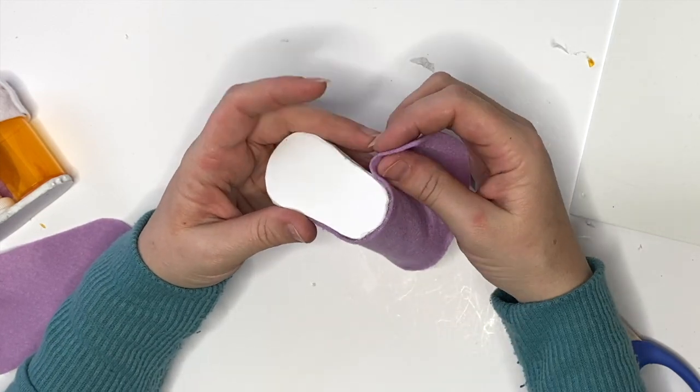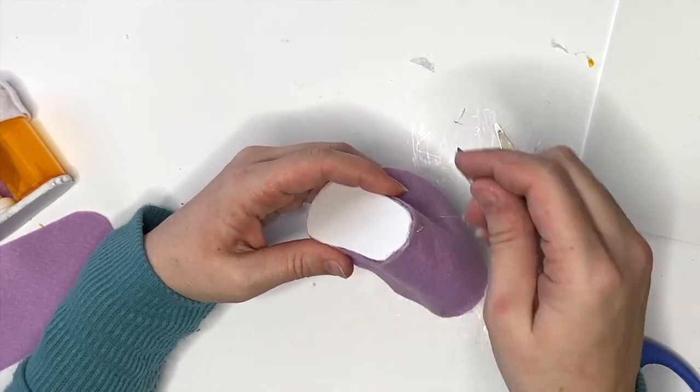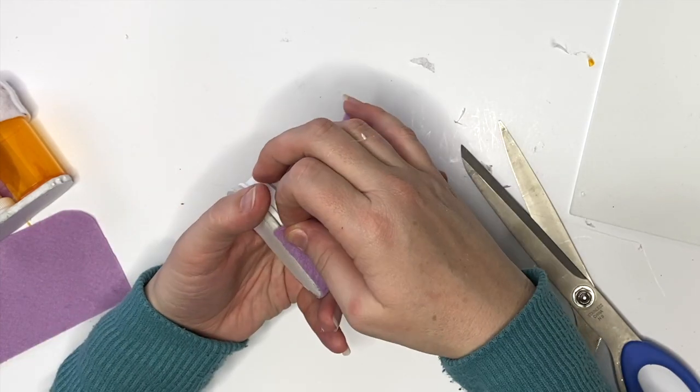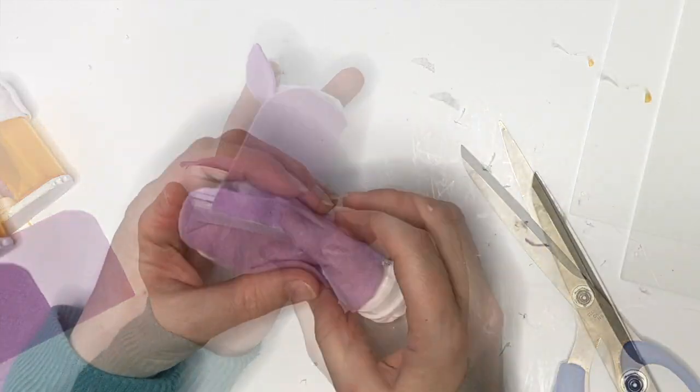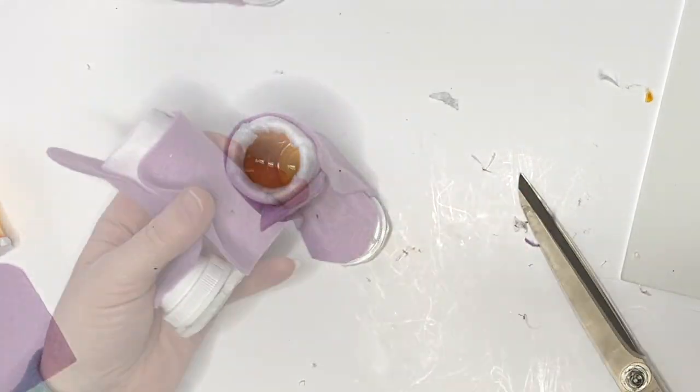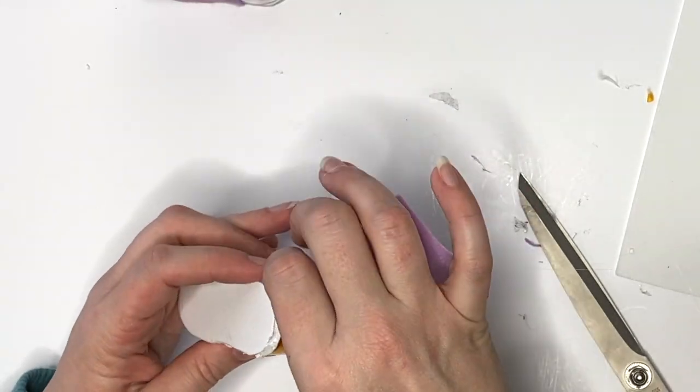Now I chose to sort of bend mine down a little bit like a real Converse after you wear them a while. And then we just put this all the way around, squeeze the tongue, and then we set that aside and do the other shoe.